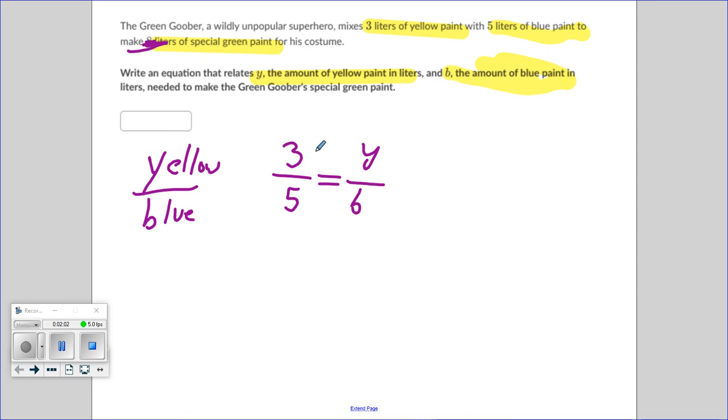When Y, yellow, is three, blue paint is five. Y is the variable for yellow, B is the variable for blue. Well, we have everything we need to write our equation now.